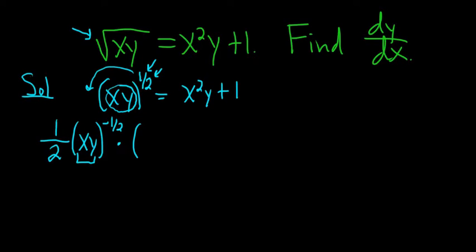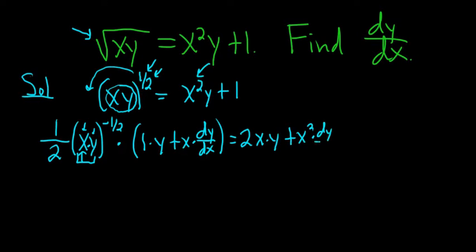Now here you have to use the product rule, because you have x times y. So the product rule says you take the derivative of the first piece, which is 1, times the second piece, plus the first piece, times the derivative of the second piece, which is dy/dx. Then here you do the same thing. Use the product rule. So it's the derivative of the first, times the second, plus the first, times the derivative of the second, which is dy/dx. And the derivative of 1 is equal to 0.